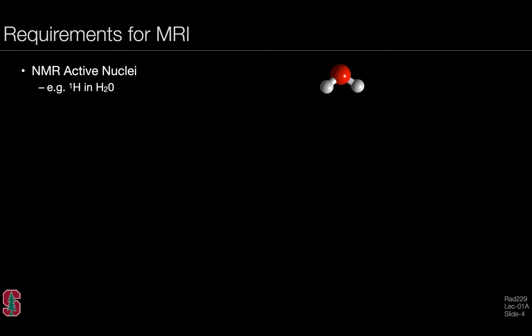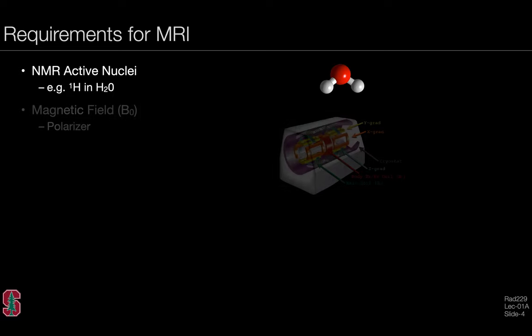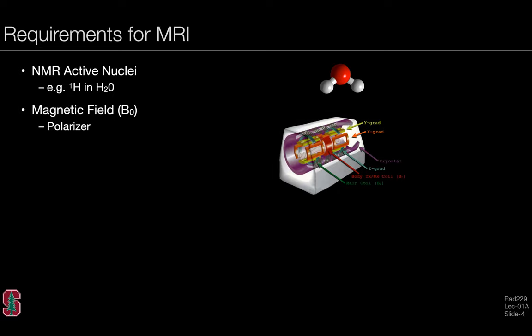We begin by describing the requirements for MRI. The first requirement is an NMR active nucleus, for example hydrogen in water. We also need the main magnetic or B0 field, which serves to polarize the spin system and make it available for detection. An RF system, or B1 exciter system, is also required to tip the magnetization away from its equilibrium position.